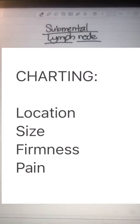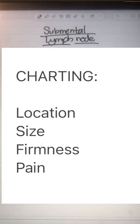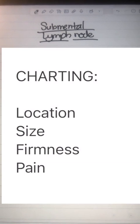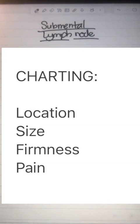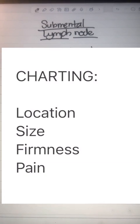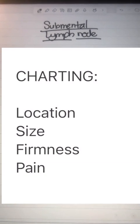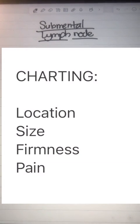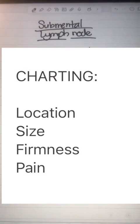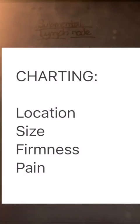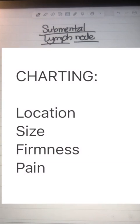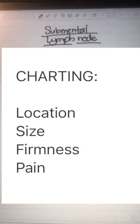Also chart the size — lymph nodes greater than one centimeter are concerning for malignancy — and firmness. If it doesn't move, this is concerning, and generally greater than one centimeter would be a concern for malignancy. Now the interesting thing you also need to chart is pain. Pain is usually a sign of acute inflammation and often related to an acute infection. It's not often found with malignancy, so just be aware that a lot of times in malignancies, there's no pain at all with a swollen lymph node.